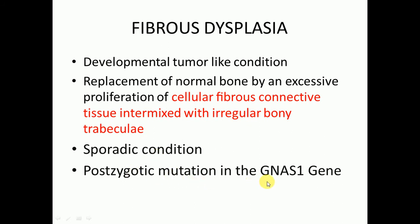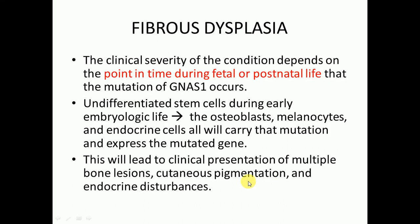The clinical severity of the condition depends on the point in time during fetal or postnatal life that the mutation of GNAS1 occurs. If the mutation occurs in undifferentiated stem cells during early embryological life, the osteoblasts, melanocytes, and endocrine cells will all carry that mutation and express the mutated gene.